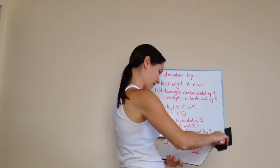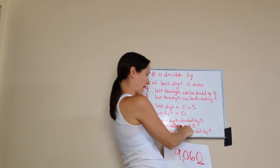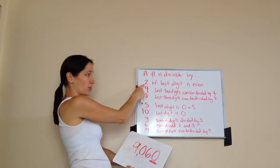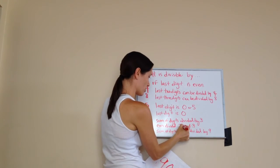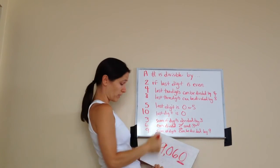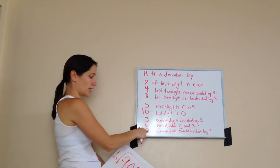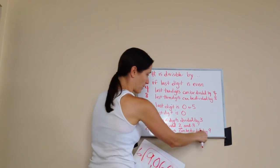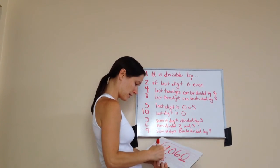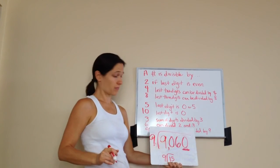Let's try 6. A number is divisible by 6 if it can be divided by both 2 and 3. We know it can be divided by 3. Can it be divided by 2? Yes — the last digit is even. So both 2 and 3 work, meaning 9,060 is divisible by 6. And then 9: the sum of the digits can be divided by 9. The sum was 15. Does 15 divided by 9 work? No. So 9 will not go into 9,060. And those are the rules for divisibility.